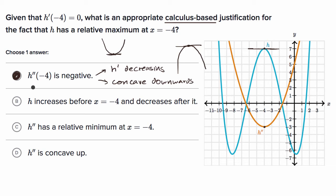Let's rule out the other choices. The second choice says h increases before x equals negative four — that is indeed true — and h decreases after it — also true. That is a rationale for thinking we have a maximum point, assuming the function is continuous at x equals negative four. So this is true and is a justification for a relative maximum, but it is not calculus-based, and that's why we can rule this one out.